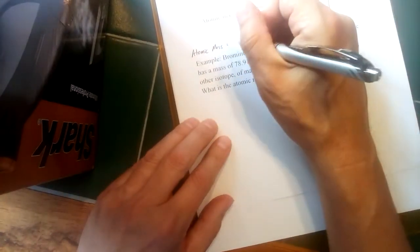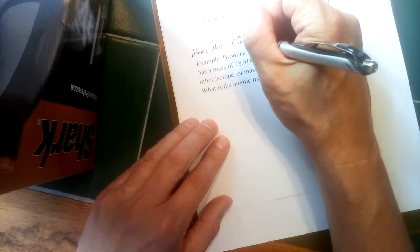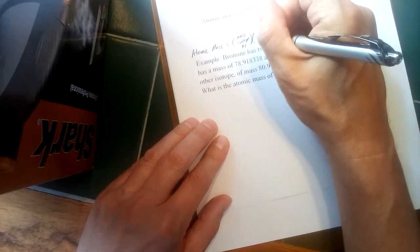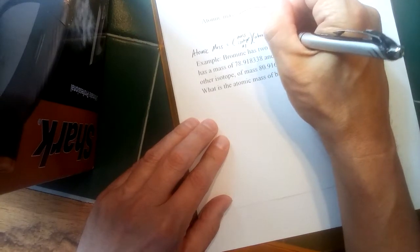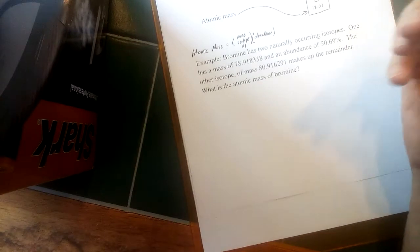So I'm gonna say mass of isotope number one and then multiply by the abundance, what fraction of the sample is made up by that particular isotope—abundance number one.